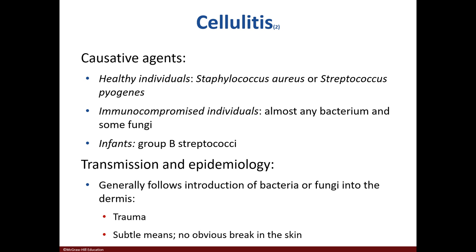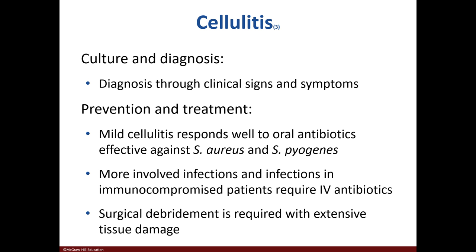In healthy individuals, Staph aureus or Strep pyogenes are the causative agents, while any bacterium and some fungi can infect immunocompromised individuals. Infants can be infected with group B Streptococci. The mode of transmission is the parenteral route, where bacteria or fungi enter via trauma or accidentally. Cellulitis can be diagnosed by signs and symptoms and treated with oral or IV antibiotics. In severe cases, surgical debridement may be necessary.